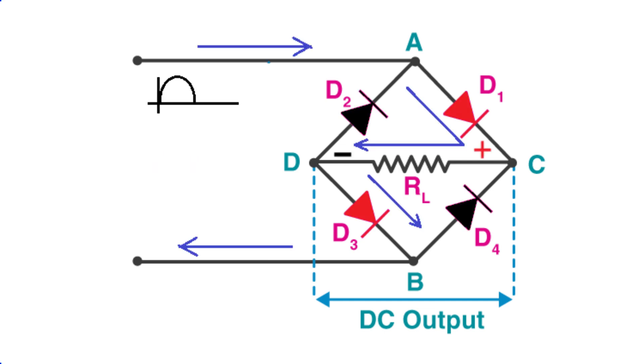Picture a positive pulse originating from the AC input, labeled as terminal A. This sets off diodes D1 and D3 to become forward biased, while diodes D2 and D4 switch to reverse biased. Subsequently, the current carves its path through the short-circuited route formed by the forward biased diodes D1 and D3.